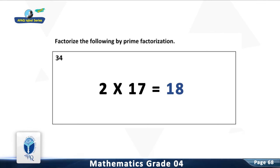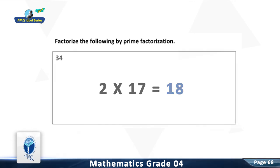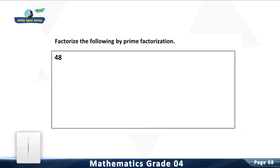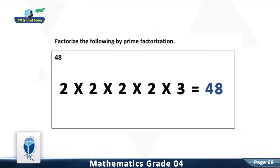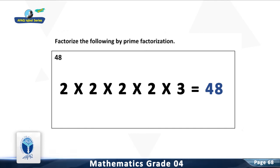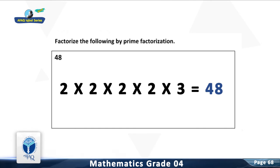34 is equal to 2 multiplied by 17. Question 3: Factorize 48 by prime factorization. You are right. 48 is equal to 2 × 2 × 2 × 2 × 3. You have done a good job.